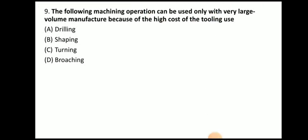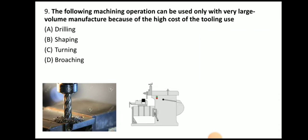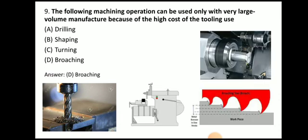Next question: which machining operation can be used only with very large volume manufacture because of high cost of tooling? The answer is broaching. Drilling and shaping use a single point cutting tool, and turning also uses a single point cutting tool. In broaching, the broach tool used is comparatively more costly than in other processes.